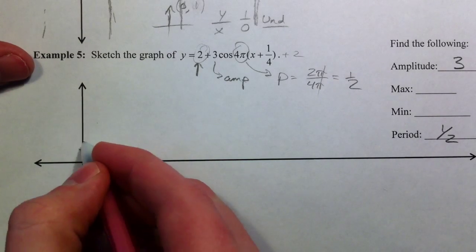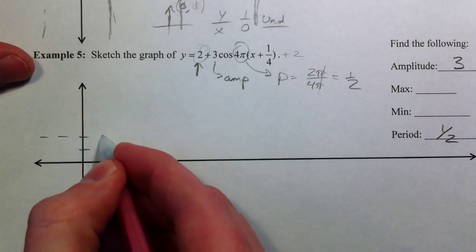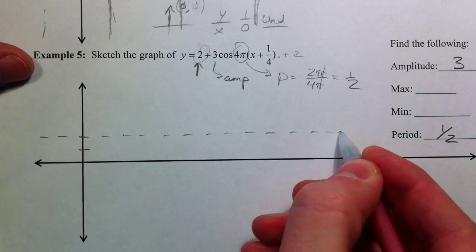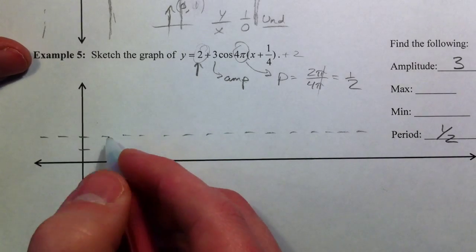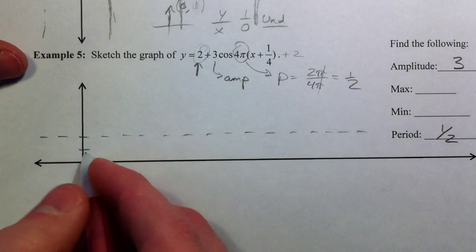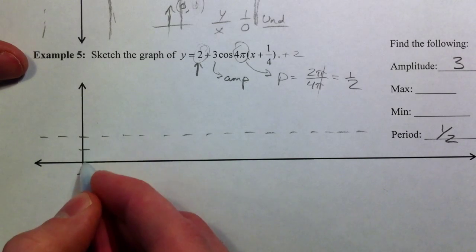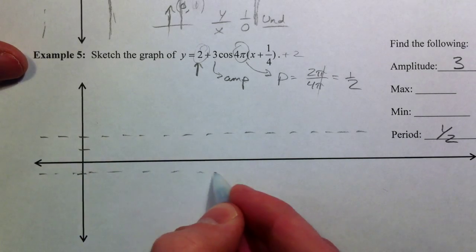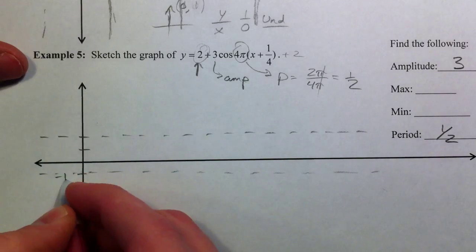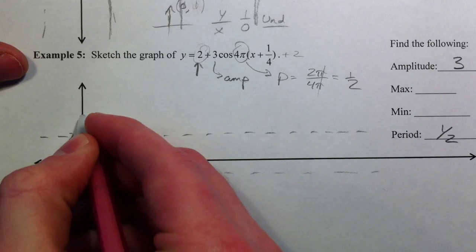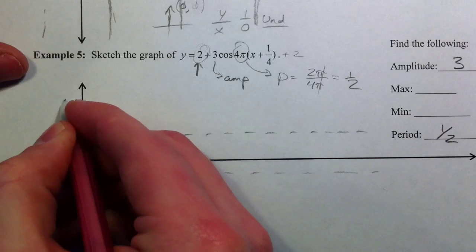So, we said it shifted up 2. And so, I'm going to draw my midline right here. And amplitude is 3. So, from there, it's going to go down 3 to negative 1. And up 3 to 5.